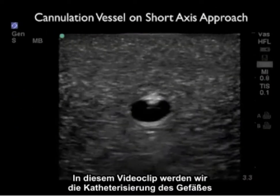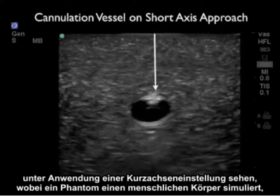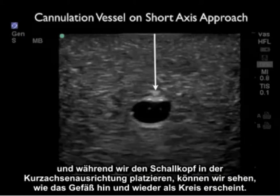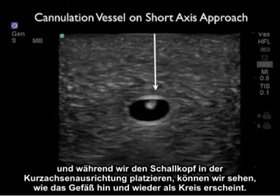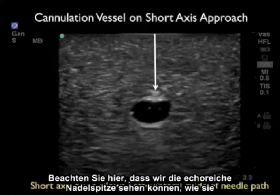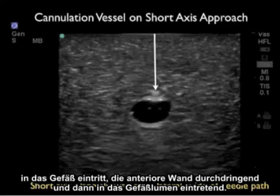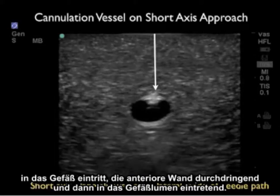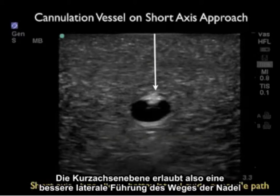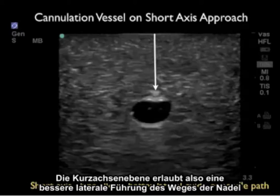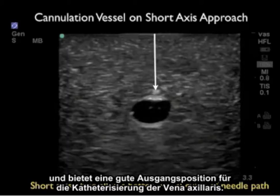In this video clip we'll watch cannulation of a vessel using the short axis approach on a phantom simulating the human body. With the probe in short axis orientation, the vessel appears as a circle end-on. We can see the echogenic tip of the needle coming down to the vessel, permeating the anterior wall, and entering into the lumen. The short axis plane allows better lateral guidance of the needle path and is a good starting position for cannulation of the axillary vein.